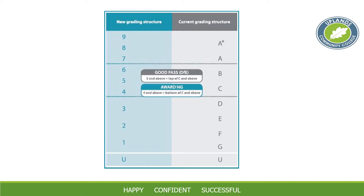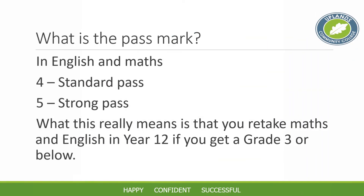So really the new C is a bit like a 4. In maths and English, in order to progress to level 3 courses after students are 16, a grade 4 is considered a pass at which you don't need to continue that subject. But for many A level subjects, you need at least a strong pass — if not higher, a 6 or a 7 — to be really successful at A level.